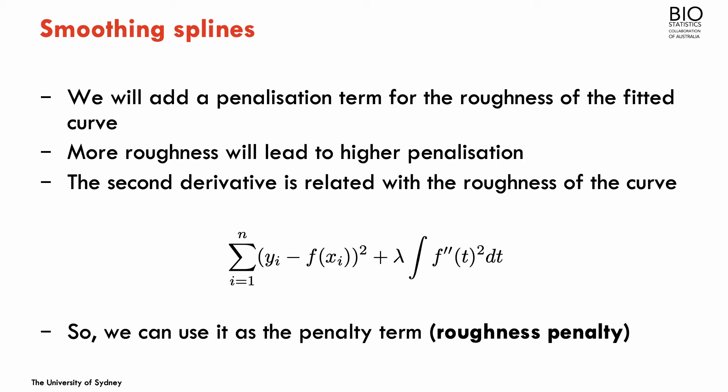You might recall from your maths that the first derivative will give you the slope of the curve at each time point, and the second derivative tells you how much the slope is changing. The second derivative is really a measurement of this idea of roughness, how wiggly the fitted curve is. So we're going to use the second derivative as the penalization term. This follows a very similar idea to the regularization problem that we've seen before, where I'm going to place a penalization that will compensate for the complexity of the model.